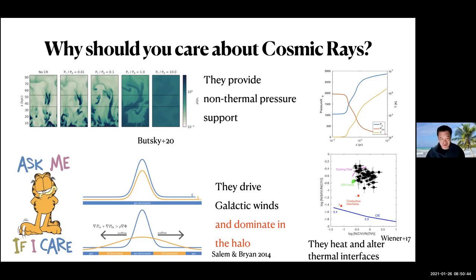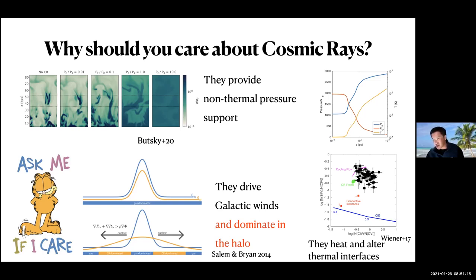Cosmic rays also drive galactic winds — the sexiest application — and they're not subject to radiative losses like thermal gas, so they can dominate in the halo. They can drive a cold wind more in line with what we see in observations. They can also influence thermal interfaces — Josh, Ellen, and I wrote a paper on this — because they provide pressure support and heating, affecting hot-cold phase boundaries. Ellen has written two beautiful reviews about cosmic rays and will talk on Thursday. Very basically: cosmic rays are relativistic particles with a short light-crossing time of a galaxy, yet they live in our galaxy for a long time due to random walking — they scatter off magnetic irregularities, a process called self-confinement, through the streaming instability for the GeV cosmic rays we care about.